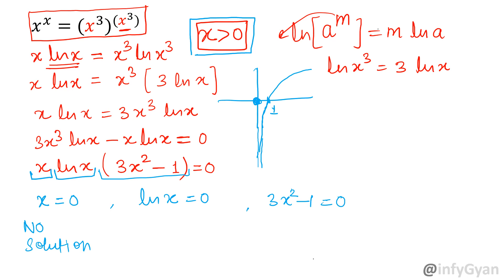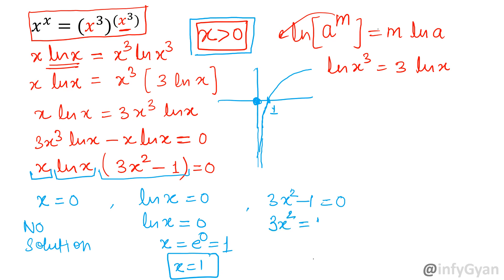Now for the second case: ln x equals 0. Writing in exponential form, x equals e to the power 0, which means x equals 1. For the third equation, add 1 to both sides: 3x squared equals 1. Divide both sides by 3: x squared equals 1 over 3. Taking the square root of both sides, x equals plus or minus 1 over root 3.